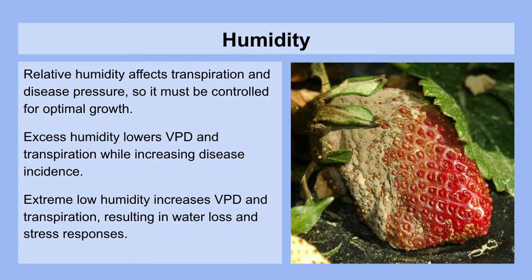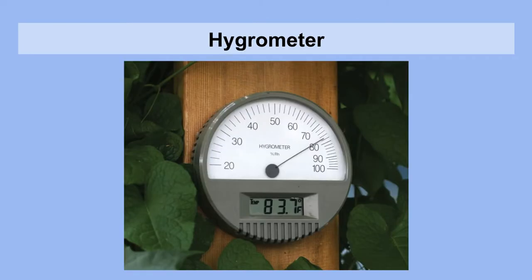Humidity is the next important environmental parameter to pay attention to. Relative humidity affects transpiration and disease pressure, so it must be controlled for optimal growth as well. Excess humidity lowers vapor pressure deficits and transpiration while increasing disease incidence. Extreme low humidity increases vapor pressure deficit and transpiration, resulting in water loss and stress responses that can be damaging. To keep track of relative humidity, you simply need a hygrometer, which will tell you the relative humidity in a localized place or microclimate where it's placed.